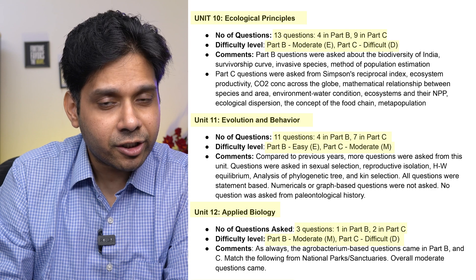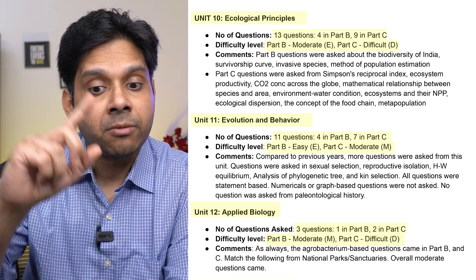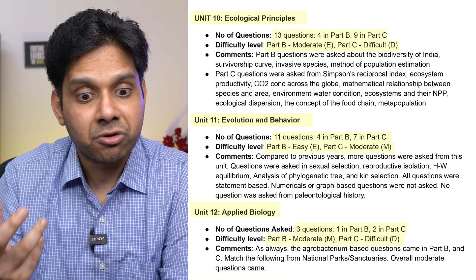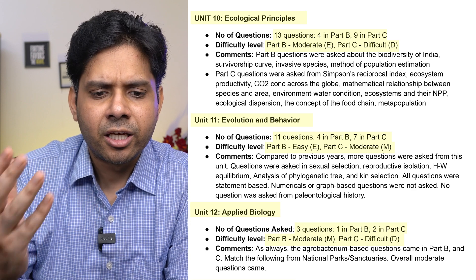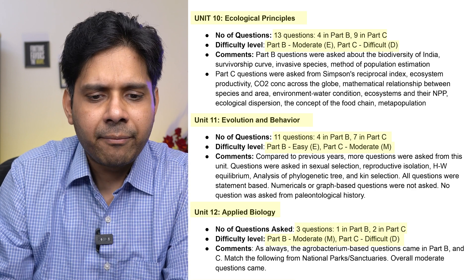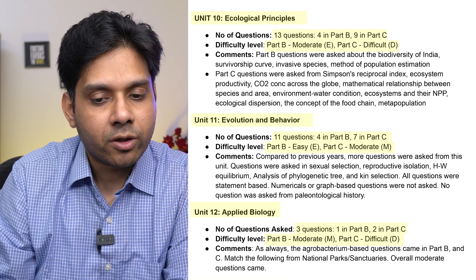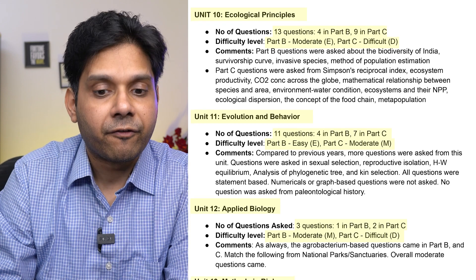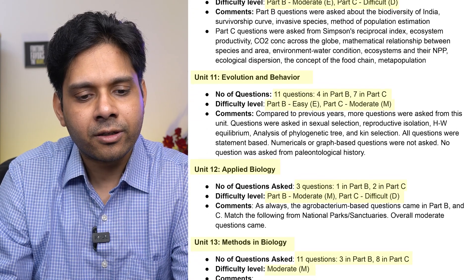Unit 10, Ecological Principles, had 13 questions — four in Part B and nine in Part C. Part B was moderate while Part C was very difficult. Part B questions covered biodiversity of India, survivorship curve, invasive species, and methods of population estimation. Part C questions were from Simpson's reciprocal index, ecosystem productivity, CO₂ concentration across the globe, and mathematical relationships between species and areas. You have to pay attention to Unit 10.